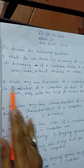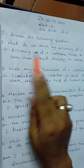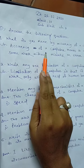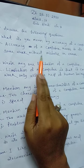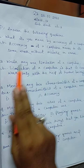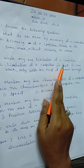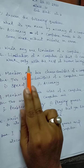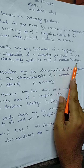The answer is: Accuracy of a computer means to do some work without mistake or error. The second question is: Write any one limitation of a computer.